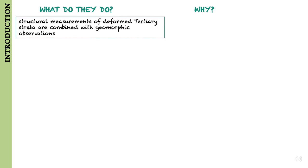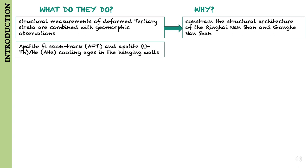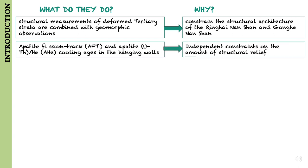The paper addresses the rates and style of deformation along each of the fault systems adjacent to the Gonghe Basin complex. Following a brief geologic background, structural measurements of the deformed Tertiary strata are combined with geomorphic observations to constrain the structural architecture of the Qinghai-Nanshan and Gonghe-Nanshan.